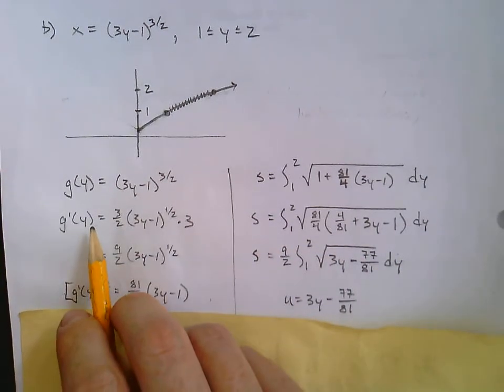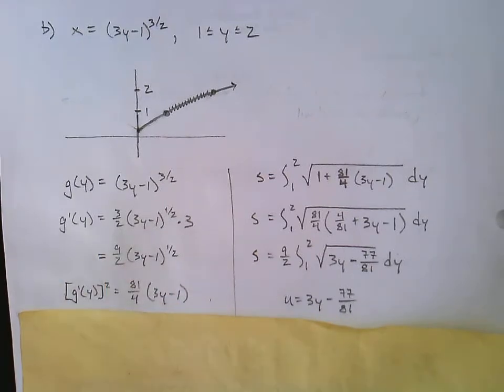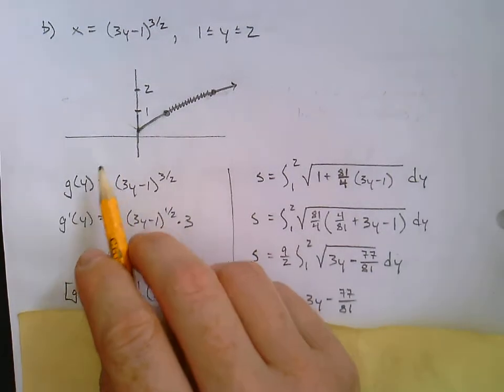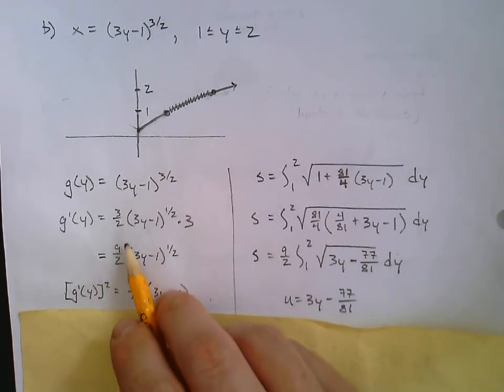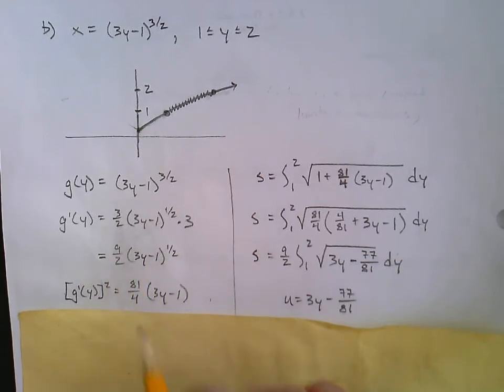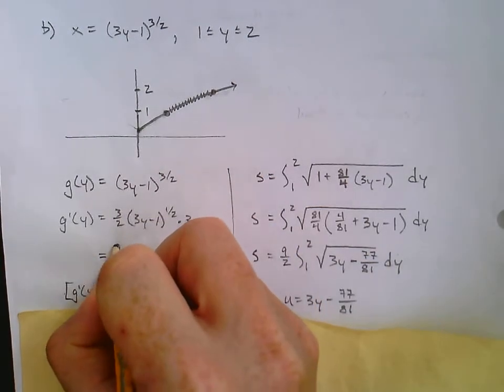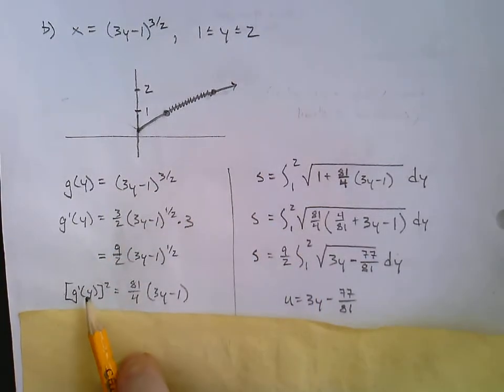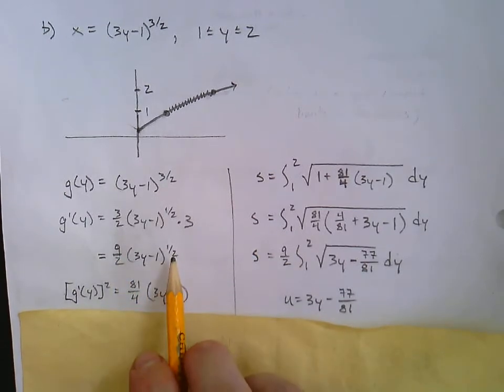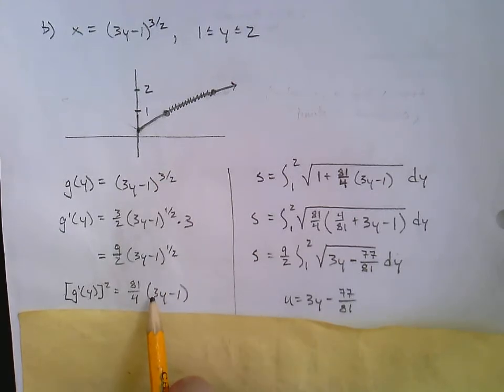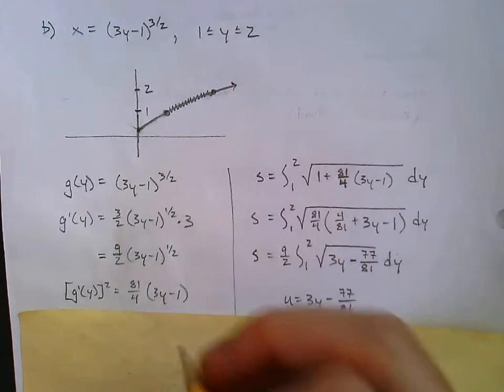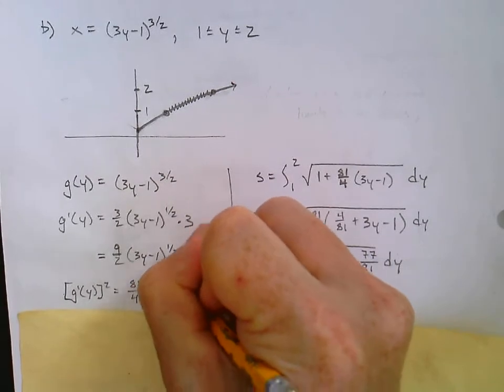However we want to call it, I call it g of y. You might even just call it x and x prime. Notice again, we've got that coefficient out in front, which is nice because we're about to square. So when we square our derivative, we've got 81 over 4, and then what do you know, the 1 half power squared just cancels, and all it is is 3y minus 1.